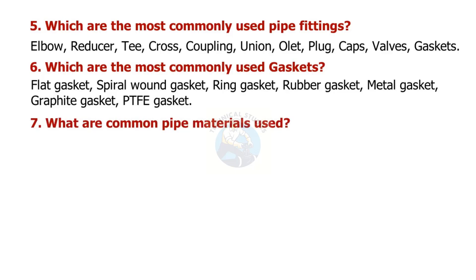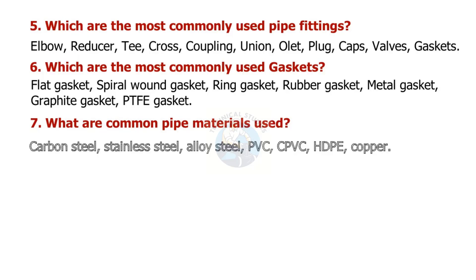What are common pipe materials used? Carbon steel, stainless steel, alloy steel, PVC, CPVC, HDPE, and copper.